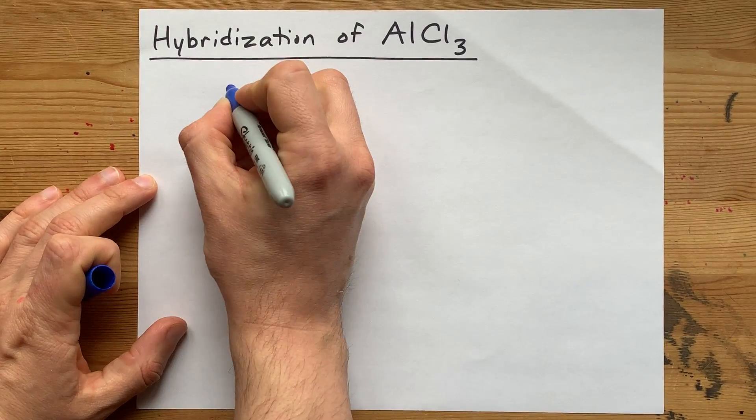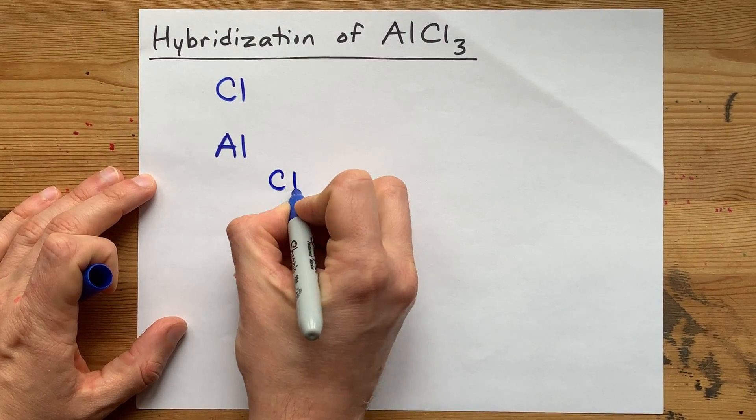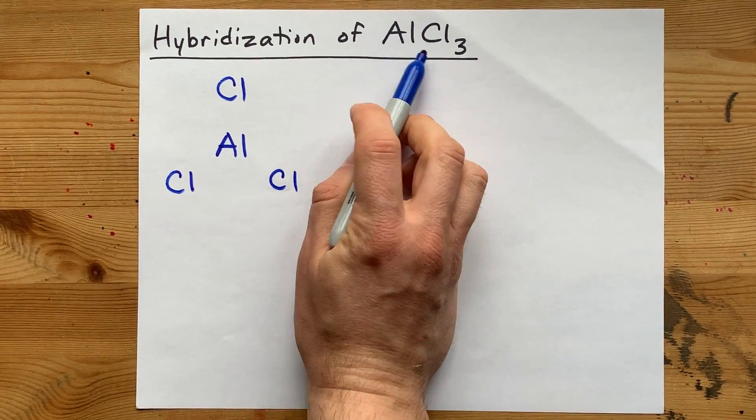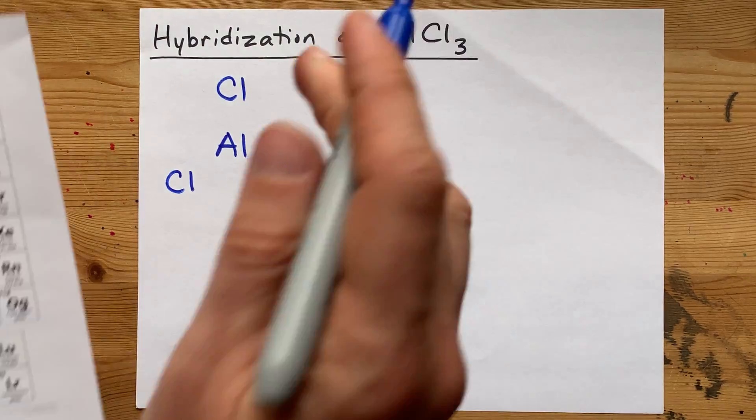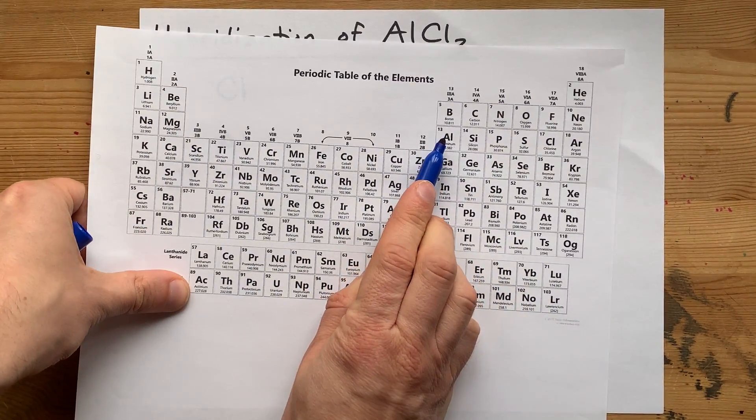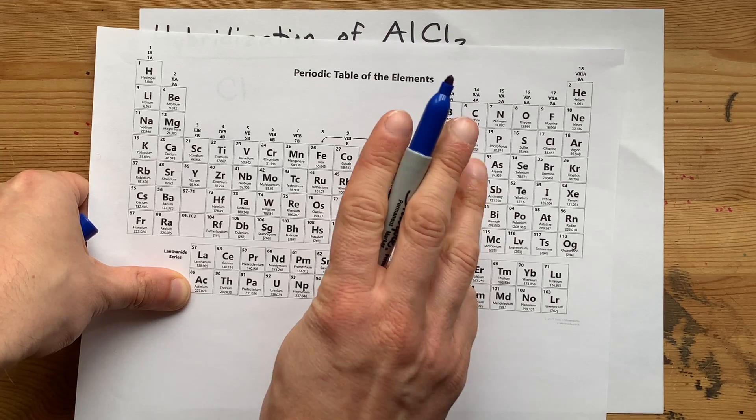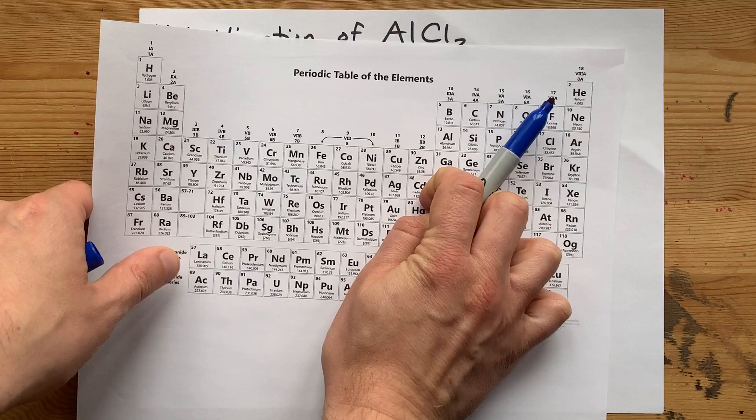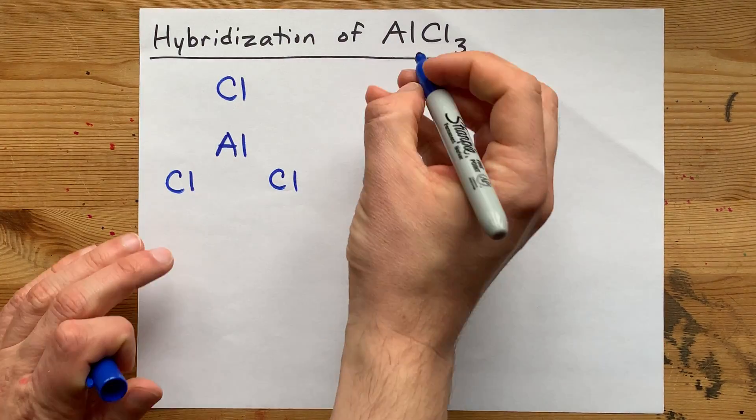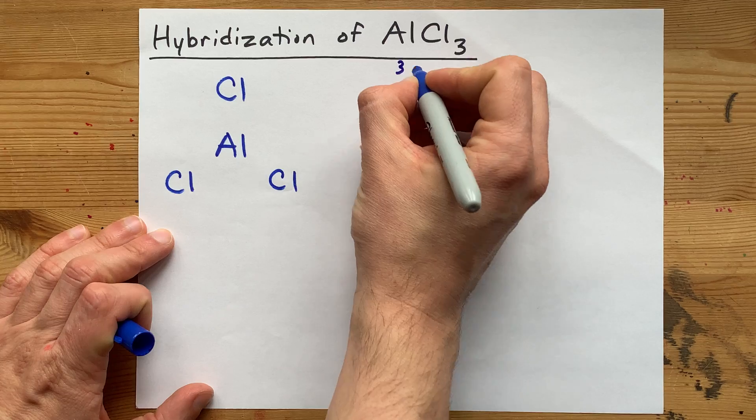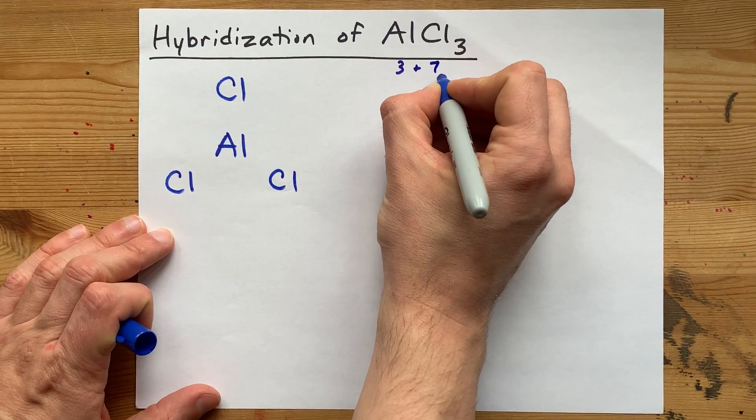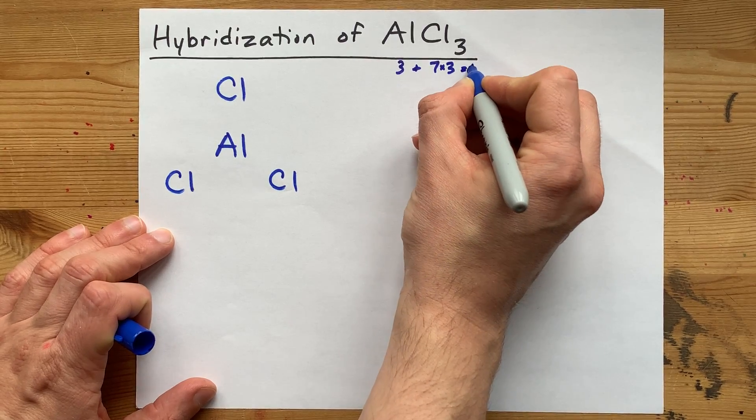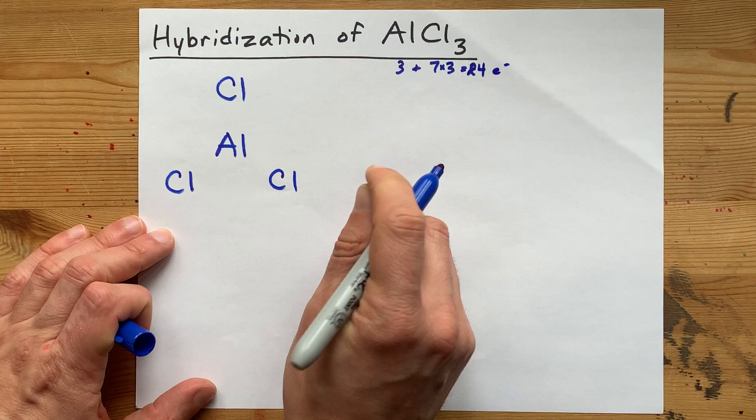You're going to put Al in the center and surround it with three chlorine atoms. To draw the actual Lewis structure, you have to count how many electrons are brought by each atom. Aluminum in group 13 brings three valence electrons. Chlorine in group 17 brings seven valence electrons each. That's three for the aluminum and seven for each of the three chlorines. That's seven times three. I get 24 valence electrons total.